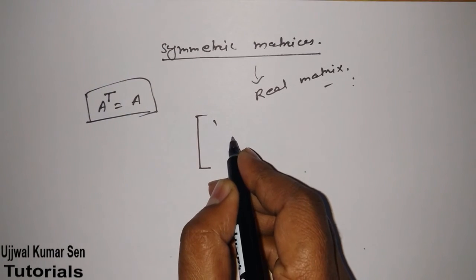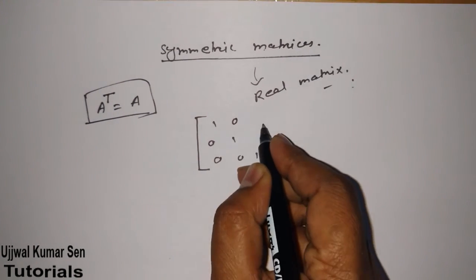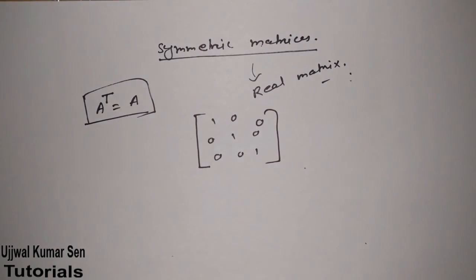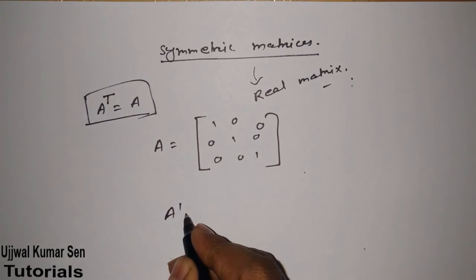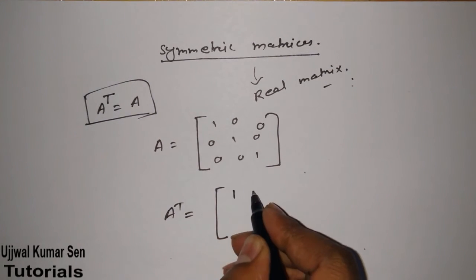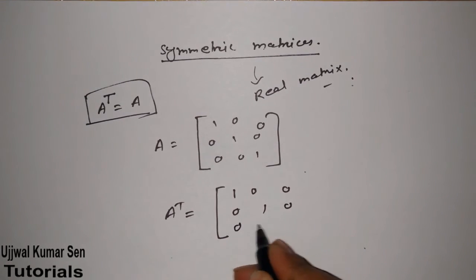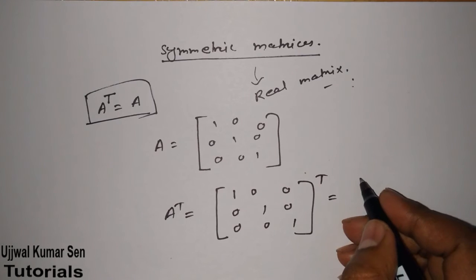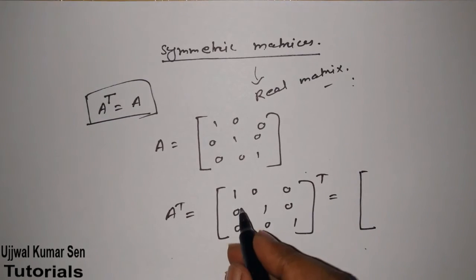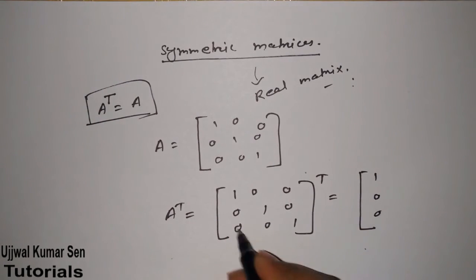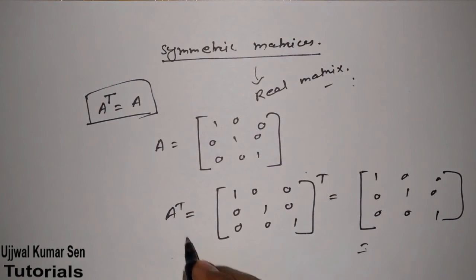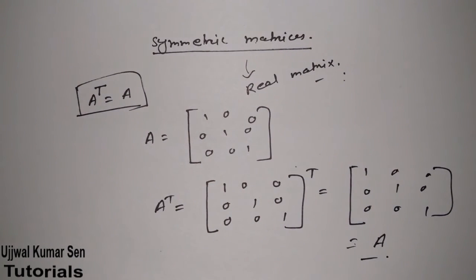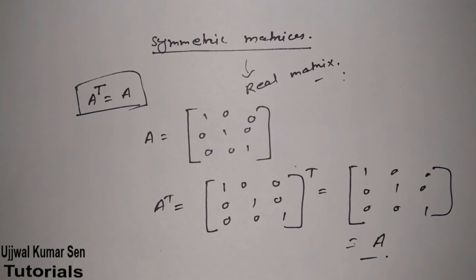Suppose we have given a matrix A equal to: one, zero, zero / zero, zero, zero / zero, zero, one. Now find the transpose of matrix A. When we take the transpose, rows are converted into columns, giving us: one, zero, zero / zero, zero, zero / zero, zero, one. So the transpose of the matrix is equal to A.